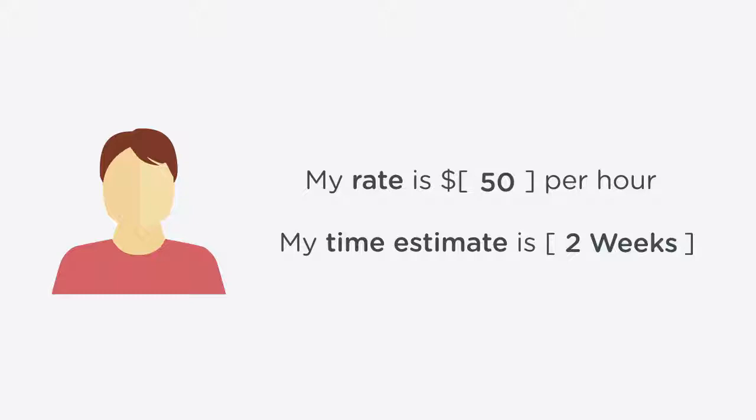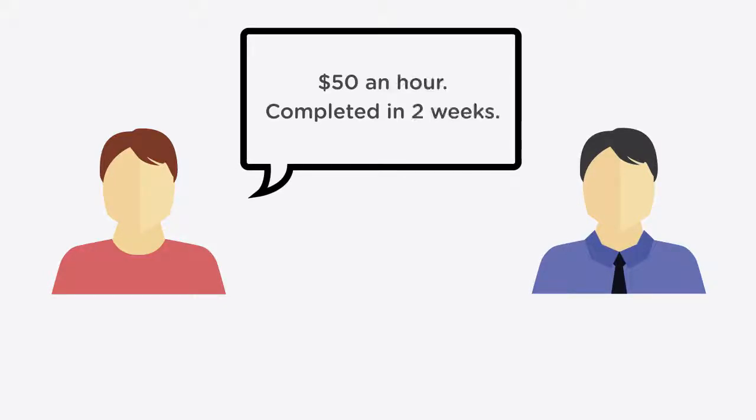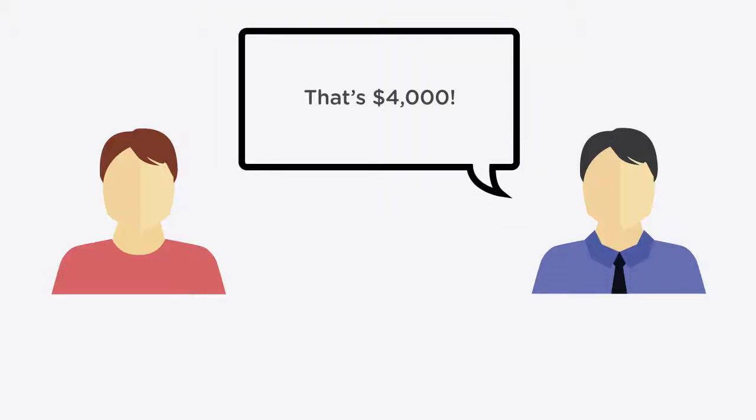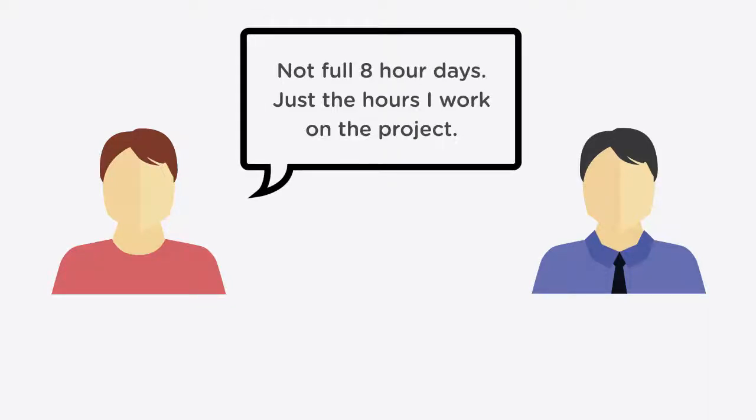Even with that information ready, you could scare clients off with hourly pricing. A rate of fifty dollars per hour is not uncommon as a web freelancer, but it might seem excessive to clients who think in terms of 40-hour work weeks. If you tell a client you charge fifty dollars per hour and it will take around two weeks, they may assume you'll charge them for nine-to-five work days — a total of four thousand dollars. In reality you won't bill them for every working hour, but they might not get that, and running everything by the client gets complicated.